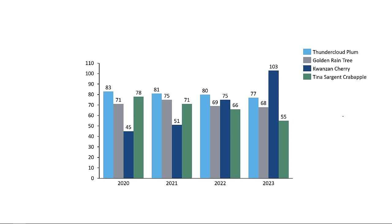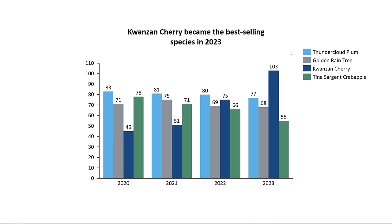The first and most important part of effective data visualization is choosing the right chart type. Let's take a look at the example from the beginning of this video — tree sales for a local nursery, with four different tree types broken out into clusters by year. This is called a clustered column chart, and the takeaway might be something like: Kwanzan Cherry became the best selling species in 2023, which you can clearly see right here, comparing each species against each other.